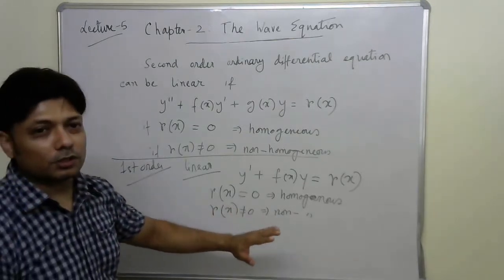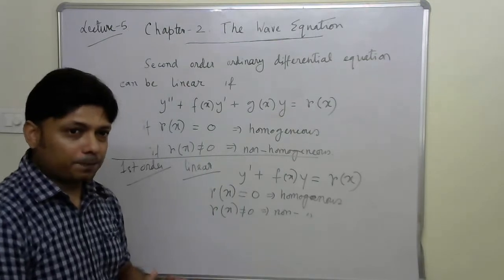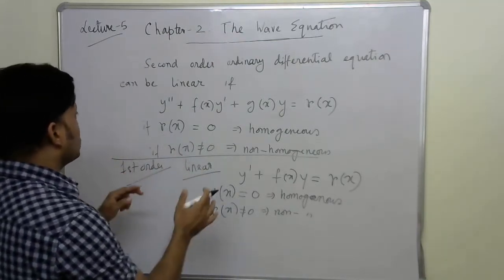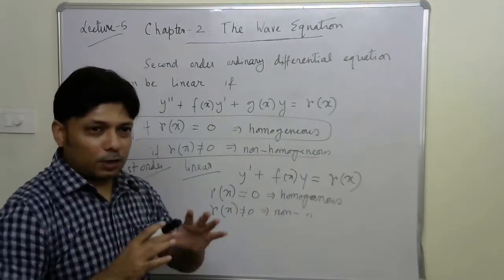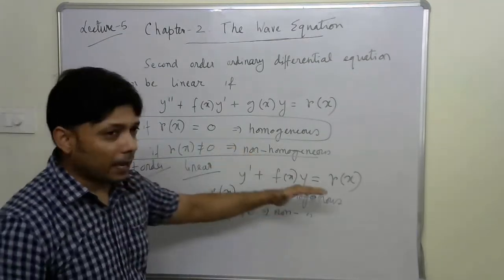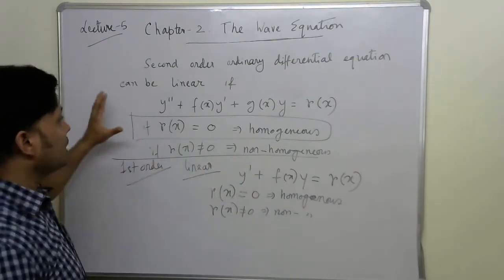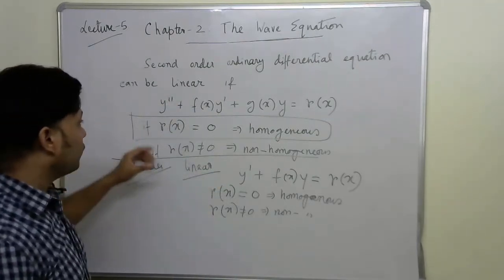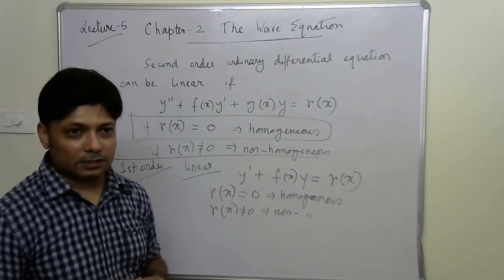The reason we learn this classification is that if an ordinary differential equation is of first or second order and is linear and homogeneous, it becomes relatively easier to solve using a particular method. When we solve the vibration of a one-dimensional string for the classical standing wave, we encounter equations that are second order, ordinary, linear, and homogeneous.